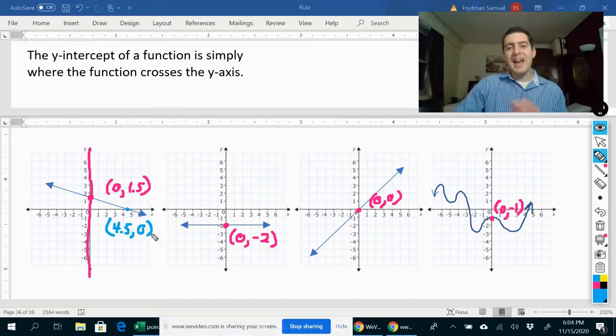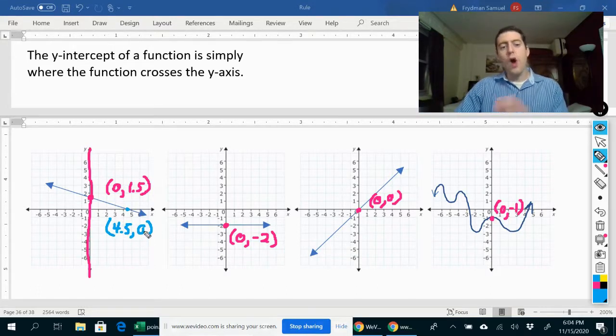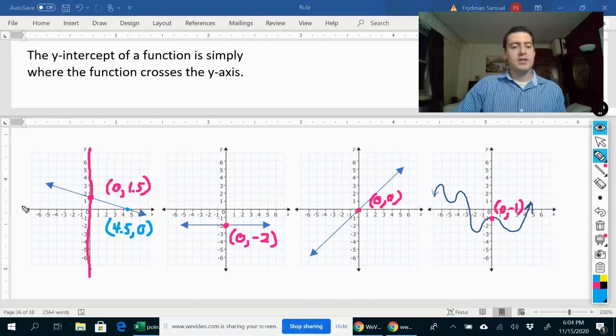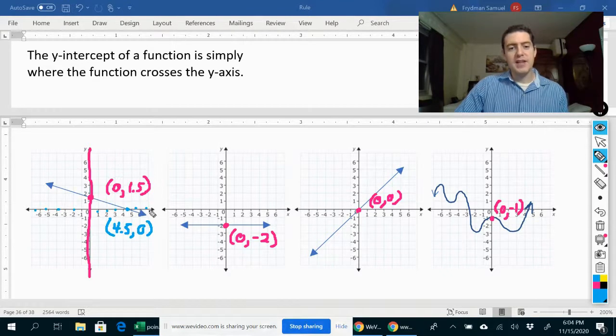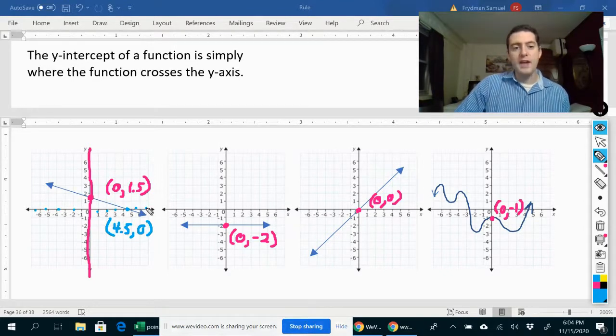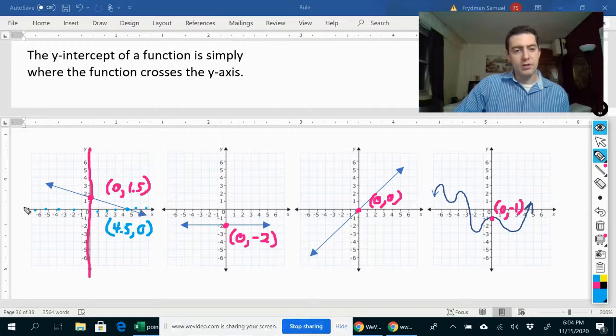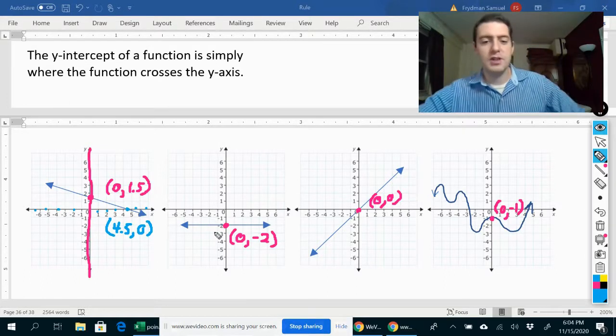Notice that for the x-intercept, the y-value is zero, because everywhere along the x-axis, all of these points that I'm putting here on the x-axis, all of them have a y-value of zero. Okay, so for the x-intercept, it's always zero.